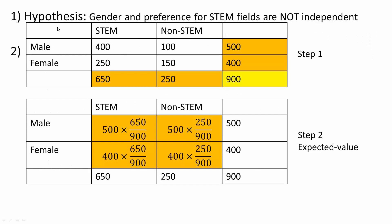The first thing we need to do is state a hypothesis. Mine is: gender and preference for STEM fields are not independent. Then we create a table based on our given information — males, females, STEM, non-STEM. We enter: 400 males preferred STEM, 100 males preferred non-STEM, 250 women preferred STEM, 150 women preferred non-STEM.